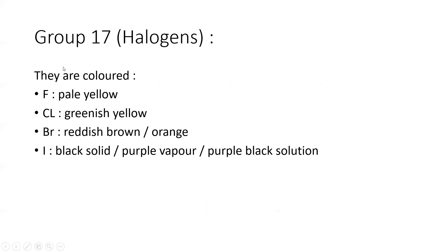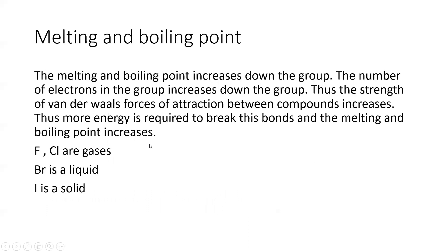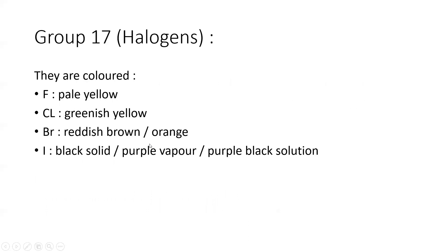Now let's move to Group 17 — also known as halogens. They are colored: fluorine is pale yellow, chlorine is greenish yellow, bromine is reddish brown or orange, and iodine is a black solid with purple vapor. Iodine can also exist as a purple-black solution.